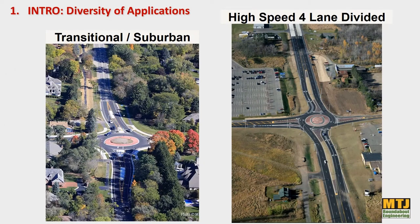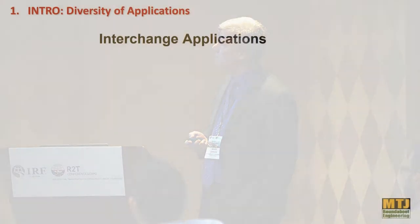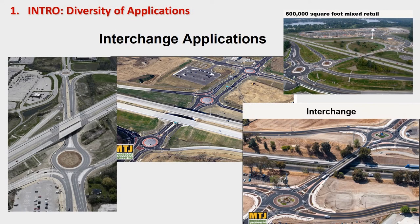On the left is a transitional suburban application — maybe 45 miles per hour, a county highway. On the right is a high-speed divided four-lane roadway. When I was with the Wisconsin Department of Transportation, I implemented a similar roundabout — it was the first one on a divided US highway. The key is addressing the context, the speeds, and the driver expectancy of that application. We're also using roundabouts at lots of different interchange types — these are all just intersections within our system.